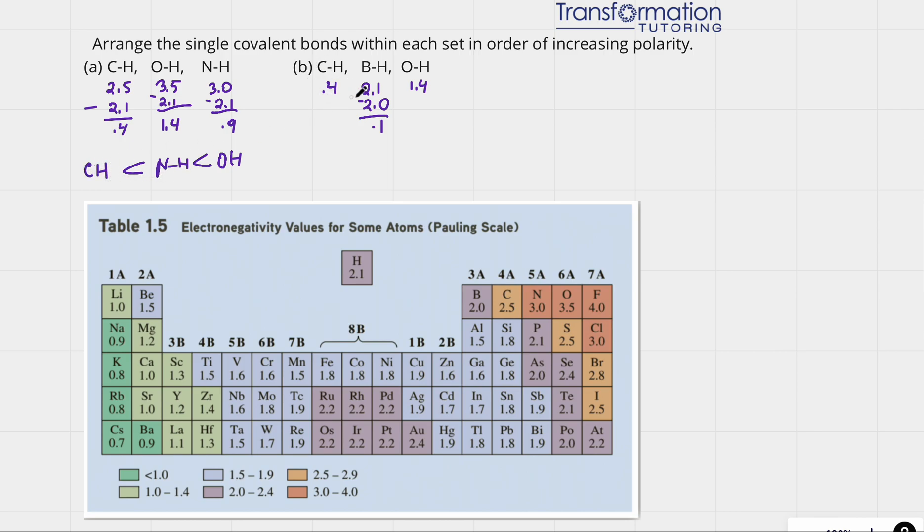Let's go ahead and look at part B. Again, here I already figured out the electronegativity difference values. This was 0.4. This was 1.4. And for BH, boron was 2.0 and hydrogen 2.1. So their electronegativity difference is 0.1.